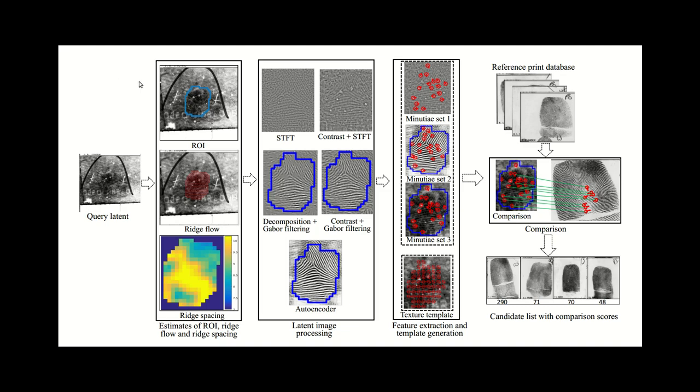Within that ROI, another algorithm tries to pick out the actual ridge flow or orientation field, and that's shown here, and that's based on the patterns of lines in the image that look like a fingerprint. The last thing at this stage is the ridge spacing, which is detected by a third algorithm, and that, as it sounds, is how far apart the ridges are.